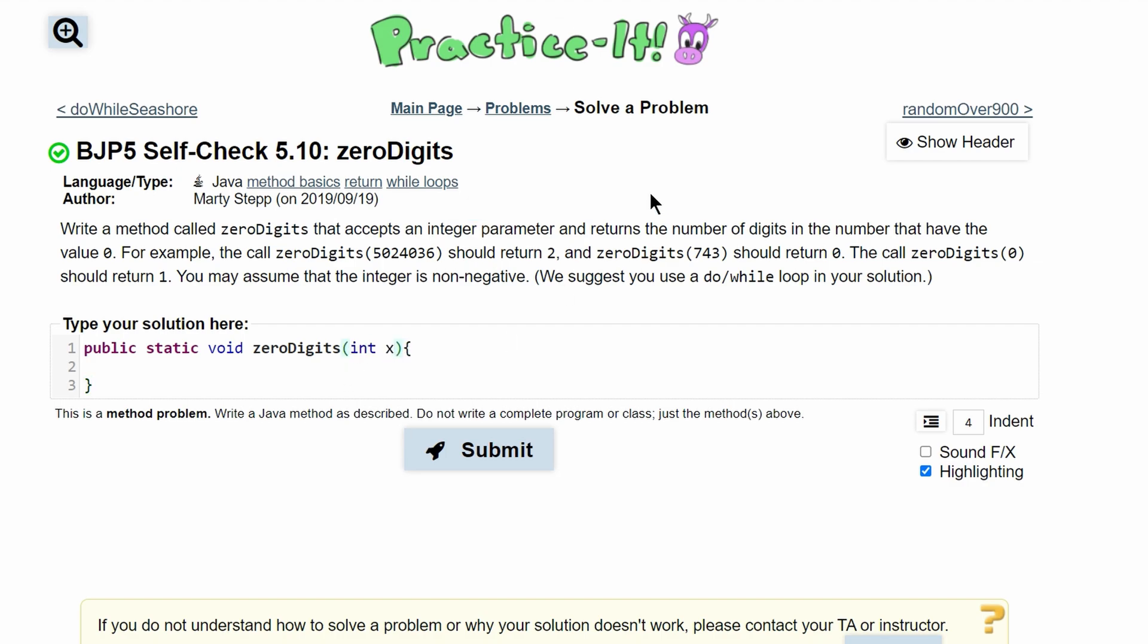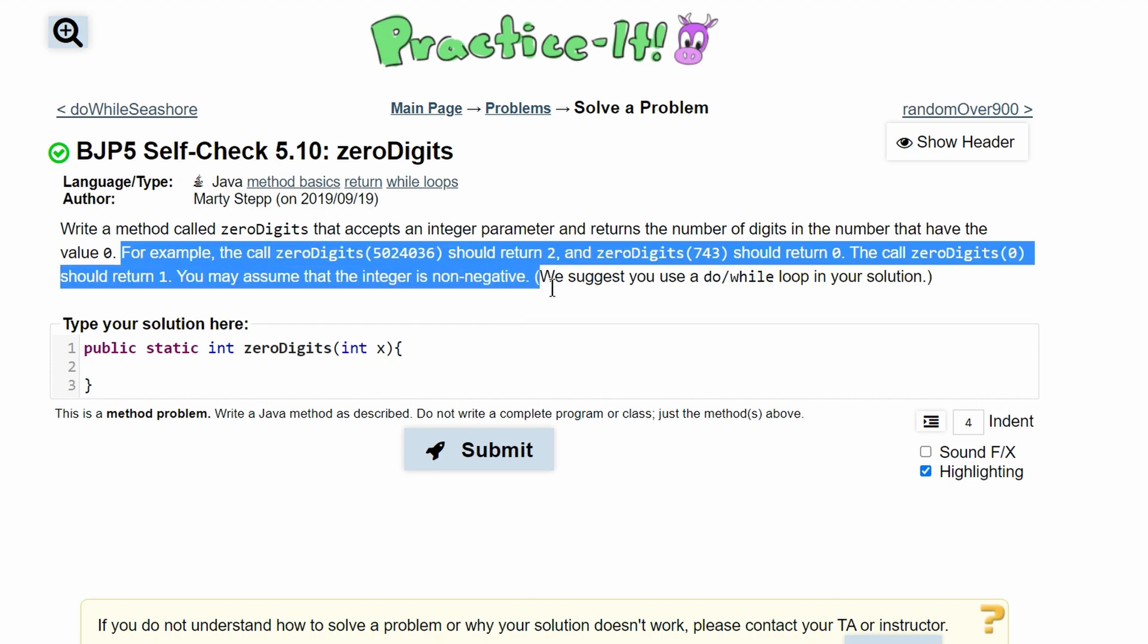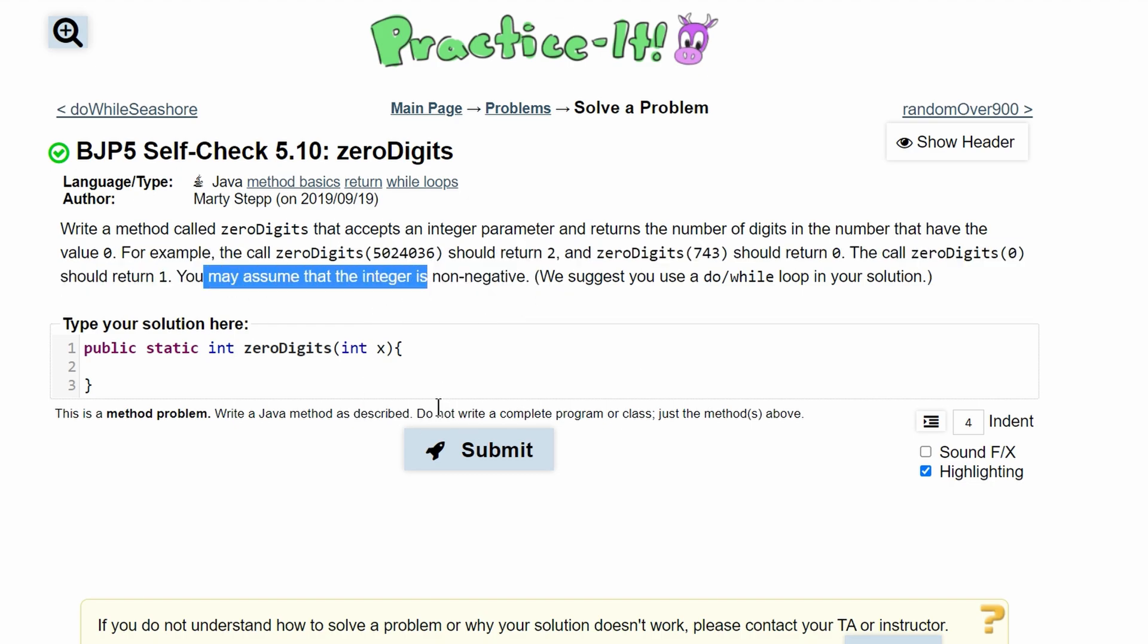We're returning the number of digits in the number that have the value zero, so we will be returning an int instead of void. Then we're just given examples here. We can assume that our integer is non-negative.